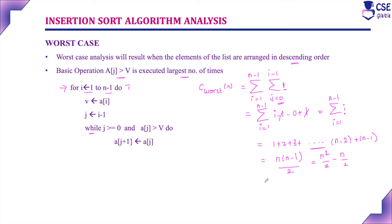So C_worst(N) is approximately N², which is nothing but O(N²). This is the worst case time complexity for the insertion sort algorithm. In worst case analysis, the basic operation executes the largest number of times, and this is the worst case efficiency.